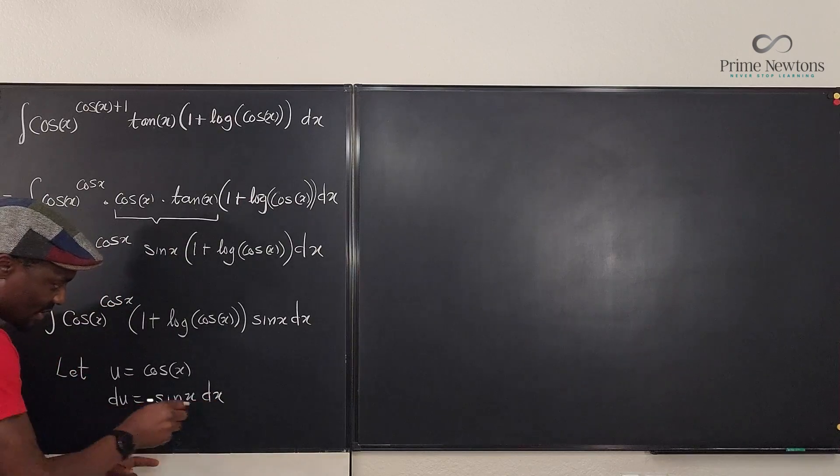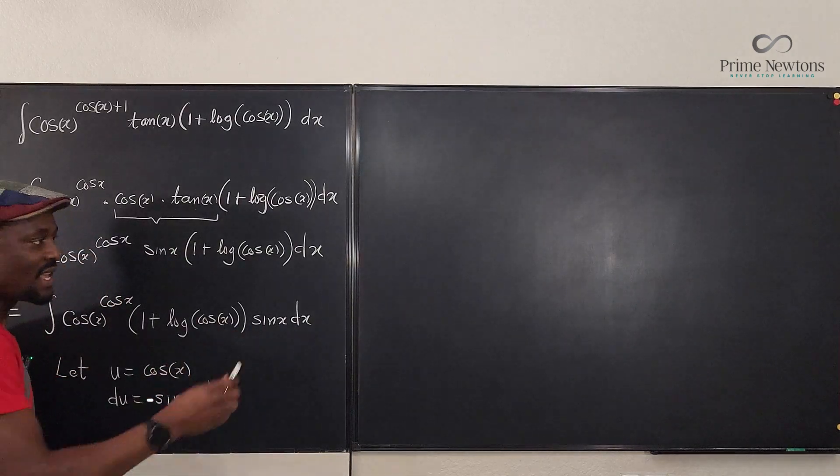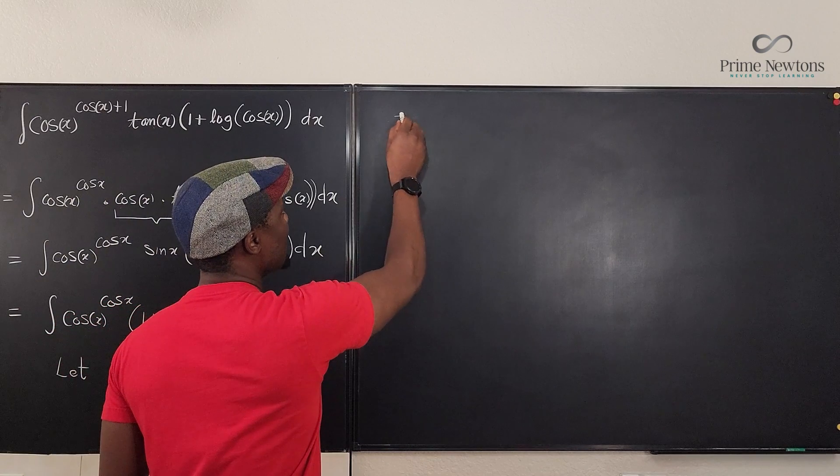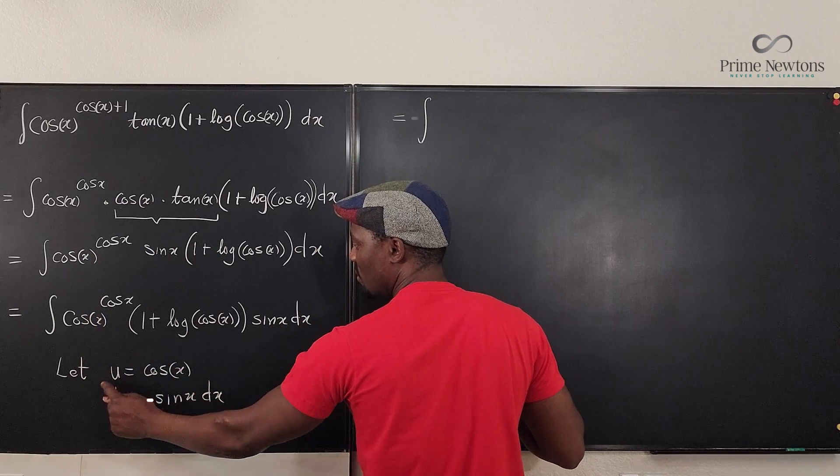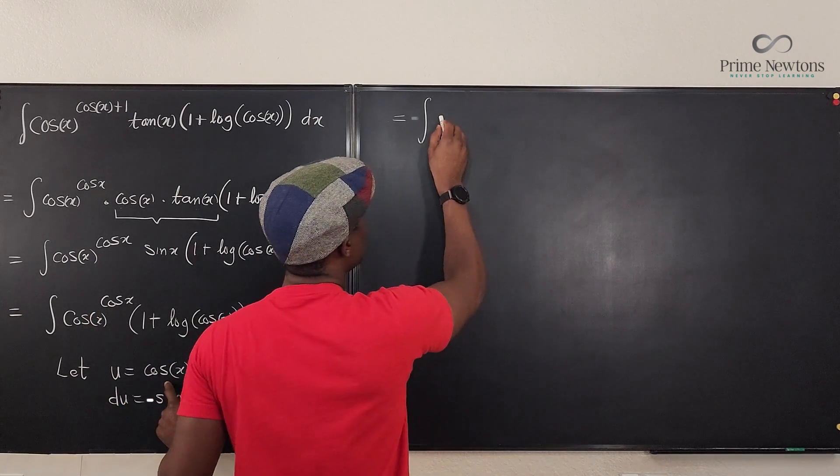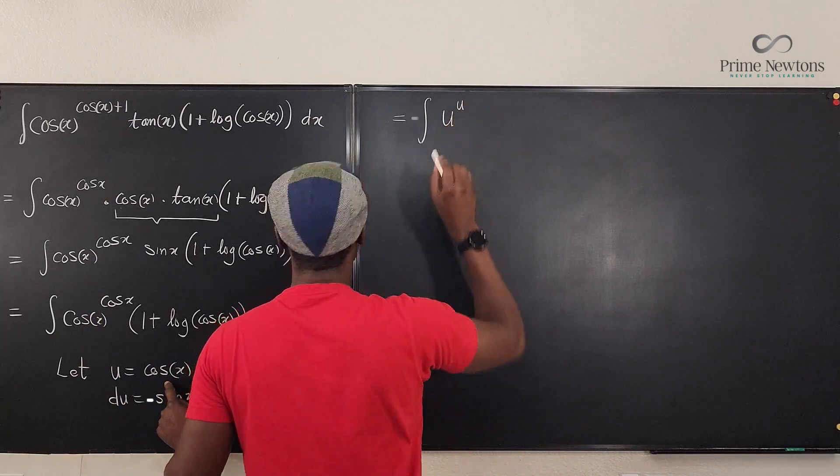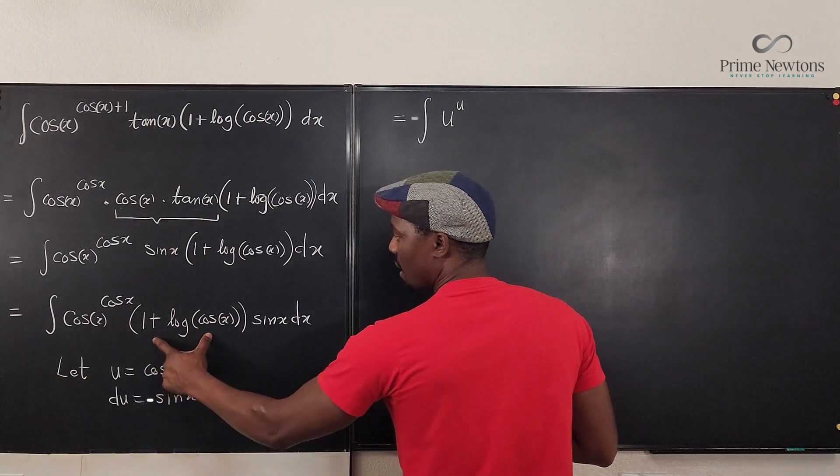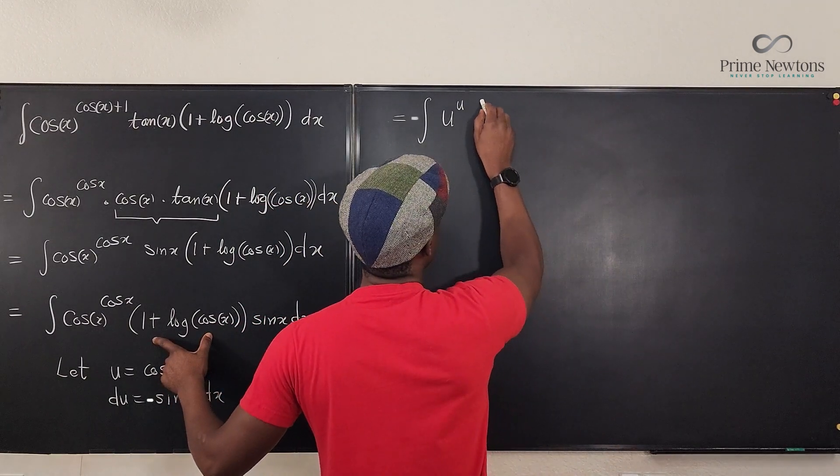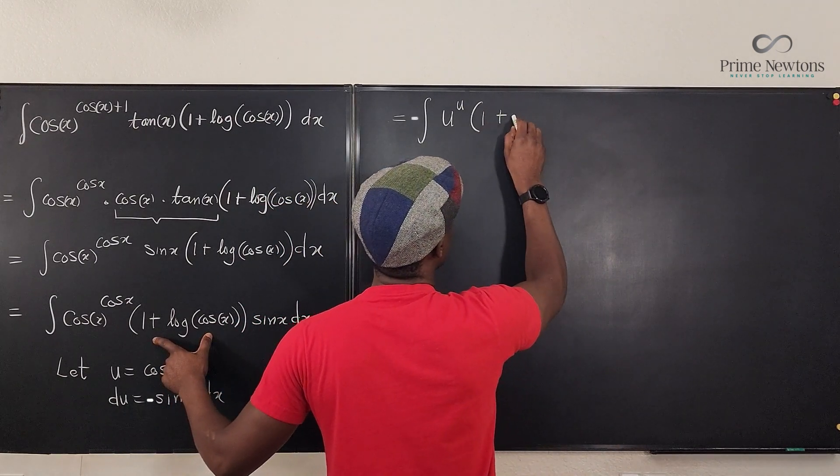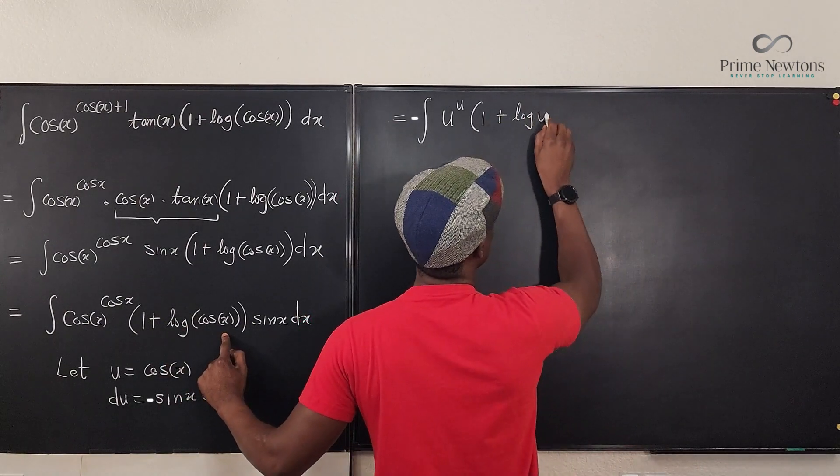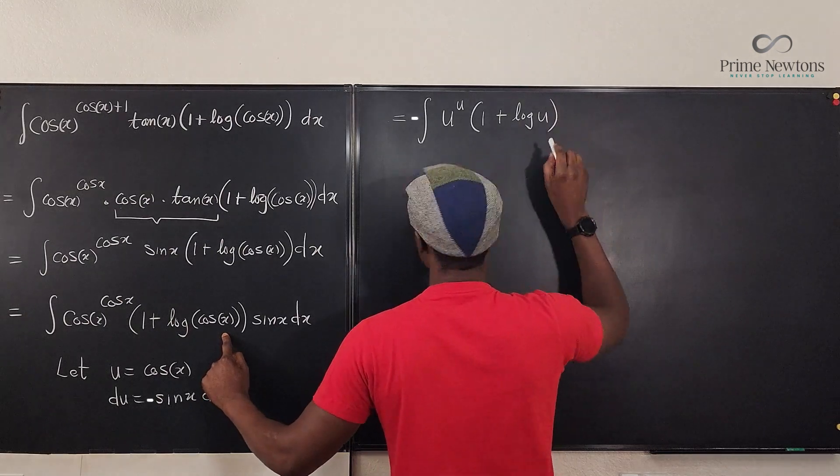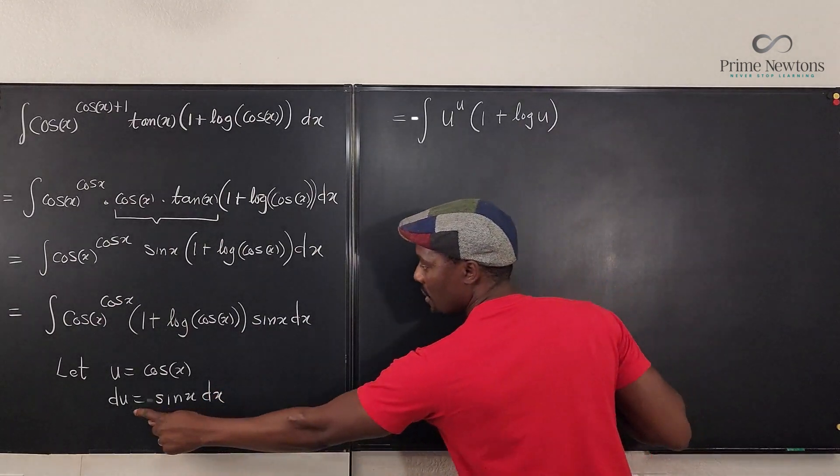So you can see that this can replace this. And we can go on and say that the integral we have, let's start writing. This is u to the u. Since u is cosine x, so it's going to be u to the u times 1 plus the logarithm of u multiplied by du.